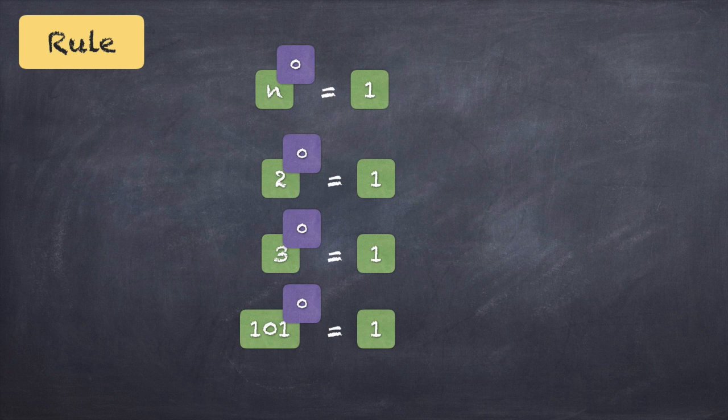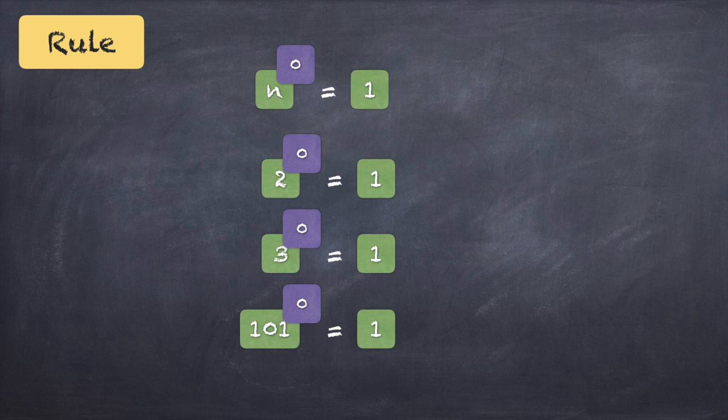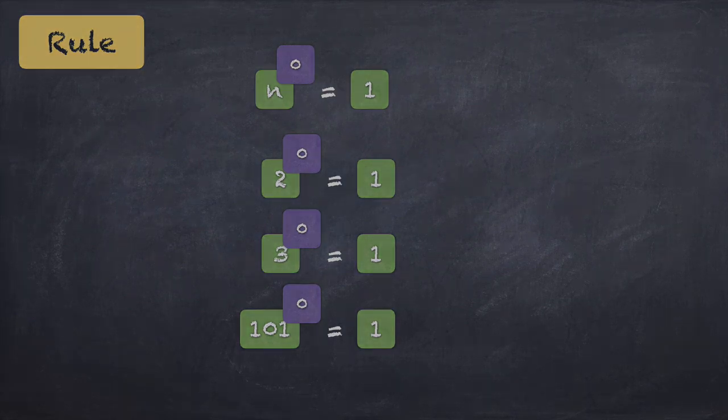At the end of last session we got into the idea that any number raised to 0 is equal to 1. So that is our next rule: n raised to 0 — n could be anything — whenever a number is raised to 0, whenever the power is 0, the result is going to be 1. So n raised to 0 is 1, 2 raised to 0 is 1, 3 raised to 0 is 1, 101 raised to 0 is also 1. Any number raised to the power of 0 is 1, meaning the number is not there, and in a product a number not being there can be replaced with 1.